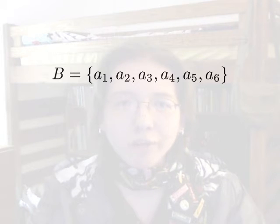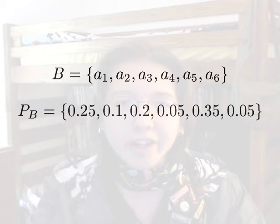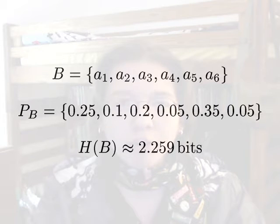Finally, let's figure out the Huffman coding for an unfair die. These are its probabilities, so its entropy is about 2.259 bits.